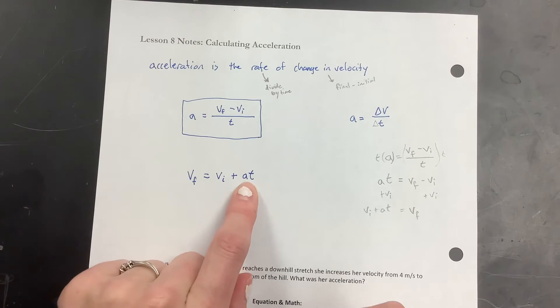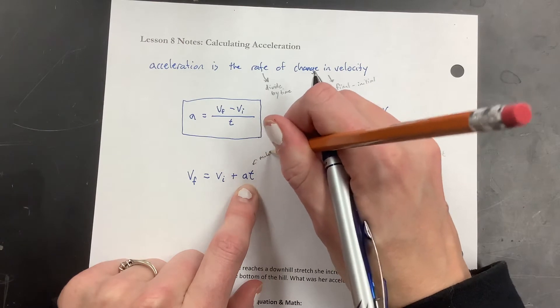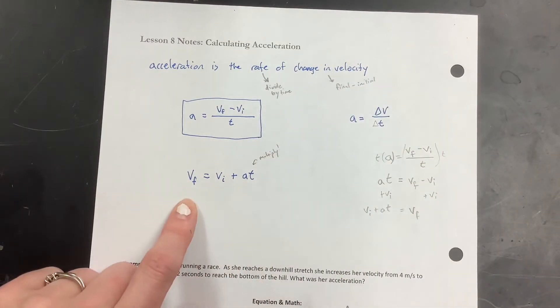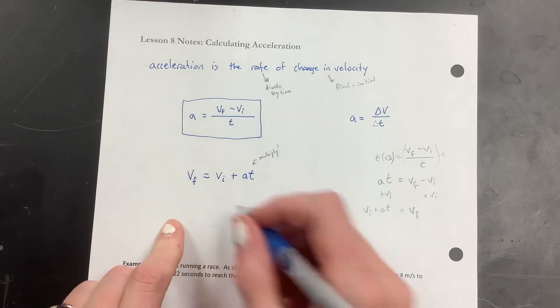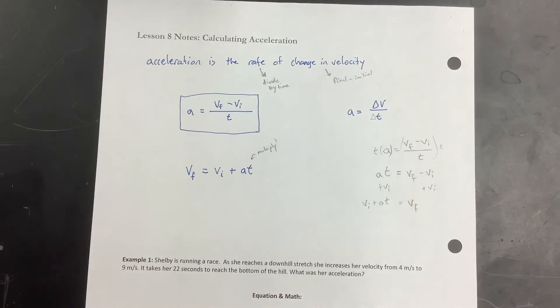So remember, when we write them next to each other like that, that means we're multiplying. If you need to make a note there, multiply, that is totally fine. Sometimes people write it with the AT first. So VF equals AT plus VI, which is mathematically the same. When you're adding, it doesn't matter about the order.